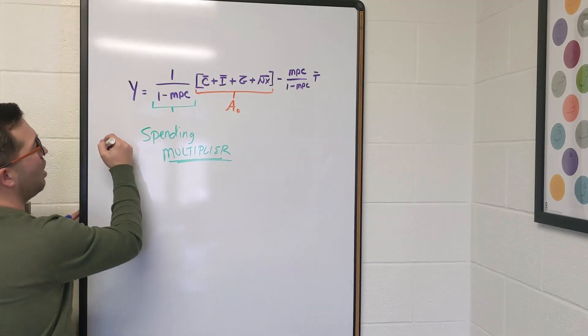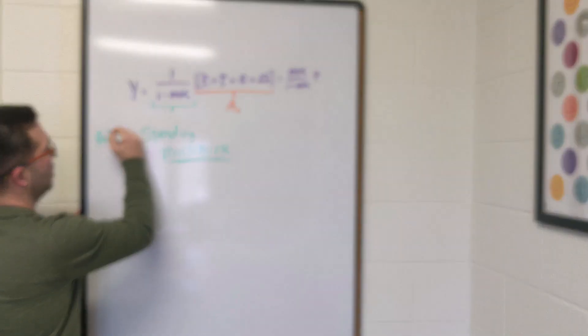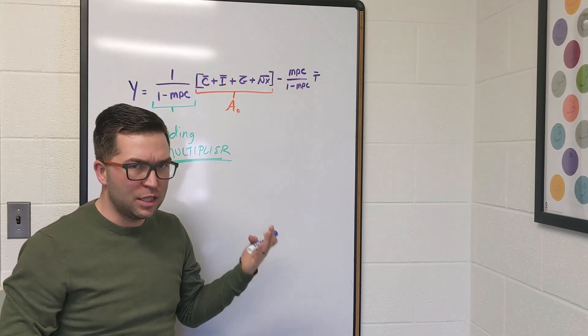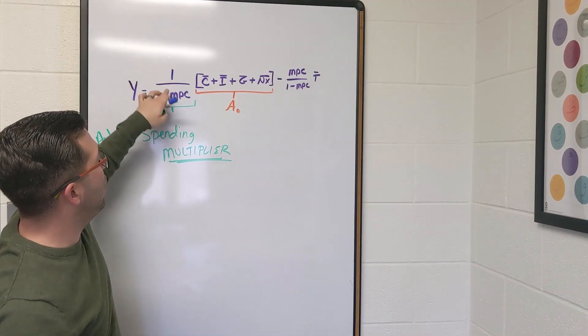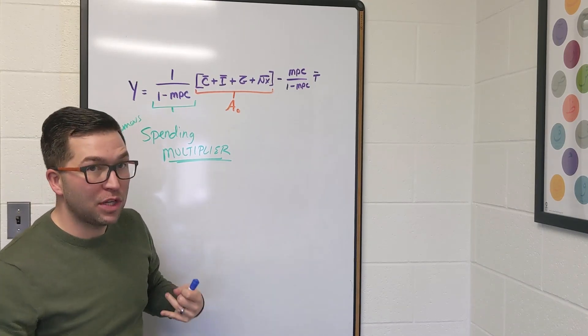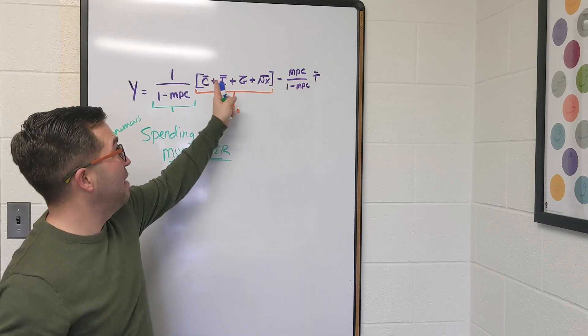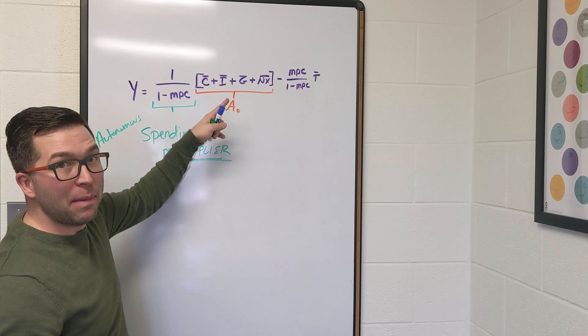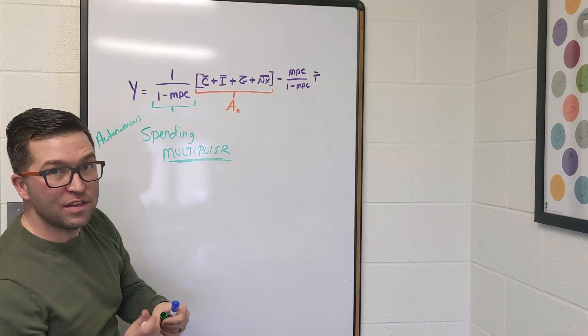Notice I'm underlining multiplier because it's multiplied by any change in that autonomous spending. You might also see this called the autonomous spending multiplier, but a lot of times you'll just see it as the spending multiplier. So this one over one minus MPC is that autonomous spending multiplier. So as we'll talk about later on, if any part of autonomous spending changes, GDP will change by that amount multiplied by whatever this number ends up being.